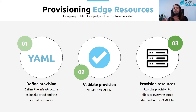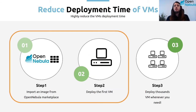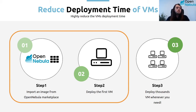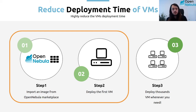These three provisioning steps have already been performed. Now I'm going to show our OpenNebula installation. The steps we are going to follow are: import an image from the OpenNebula public marketplace, deploy a VM and see how many minutes it takes to reach running state, then deploy more VMs to see how the OneStore storage is being used and how deployment times are reduced compared to the first virtual machine.